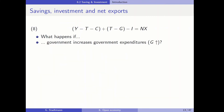Let's start with equation 8, which is an important identity where we have savings minus investment on the left-hand side, and this has to be equal to net exports. On the left-hand side we have national savings, which consists of private savings and government savings, and the difference between national savings and investment has to equal net exports.